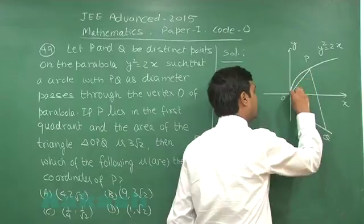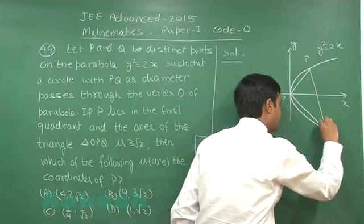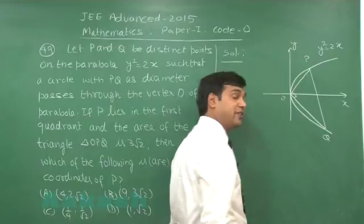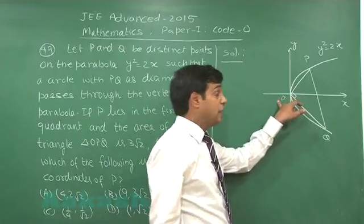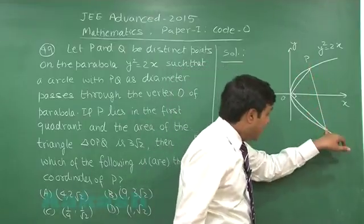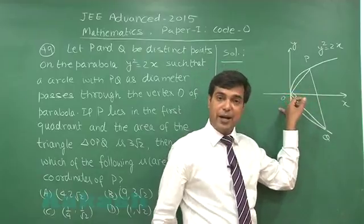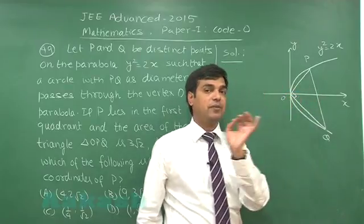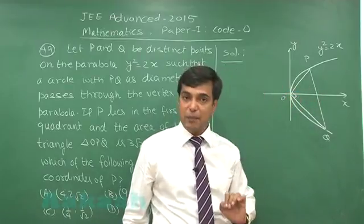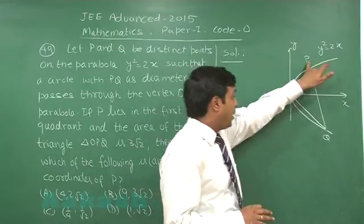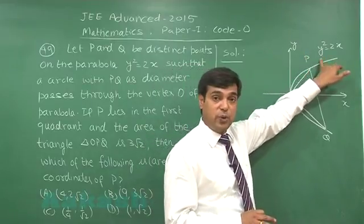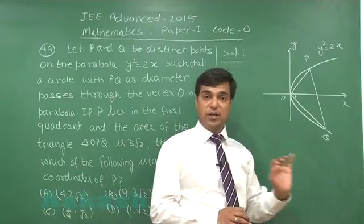Clearly triangle is right triangle at point O. When any chord subtends a right angle at its vertex, we have the formula t1 t2 equals minus 4 where the points are a t1 square, 2a t1, a t2 square, 2a t2.